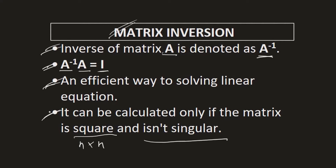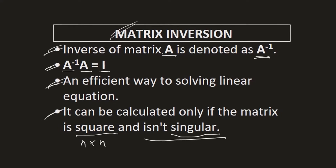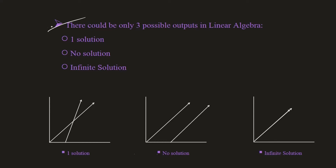It is extremely important to understand the term 'singular.' If you are following this playlist in sequence, in the lecture on introduction to linear algebra we discussed that there can only be three types of outputs in linear algebra: one solution, no solution, and infinite solutions. The case of one solution is the scenario where the matrix is not singular, while no solution and infinite solution are situations where the matrix is singular.